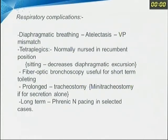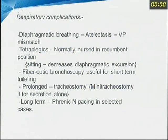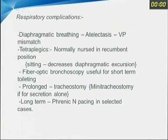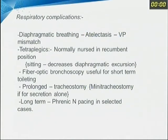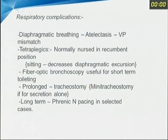Respiratory complications can occur because in quadriplegia the intercostal muscles do not work, so patients can develop atelectasis and breathe only with diaphragm movement. These patients are nursed in a recumbent position. Fiberoptic bronchoscopy can be used to clear secretions from the trachea. Tracheostomy or mini-trach may be necessary for suction, and in the long term, phrenic nerve stimulation in selected cases can be done.